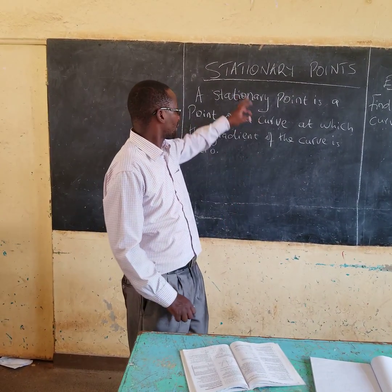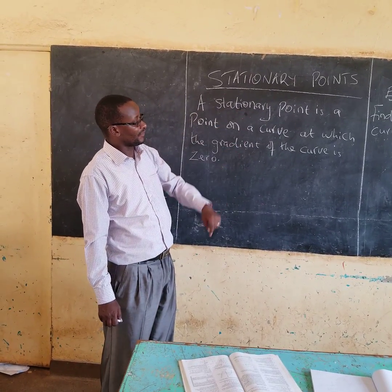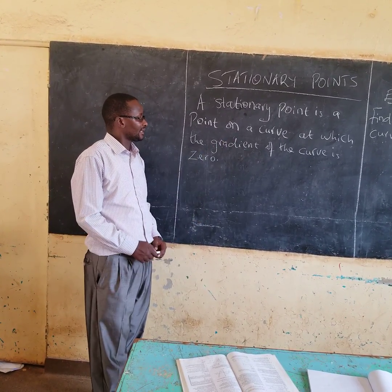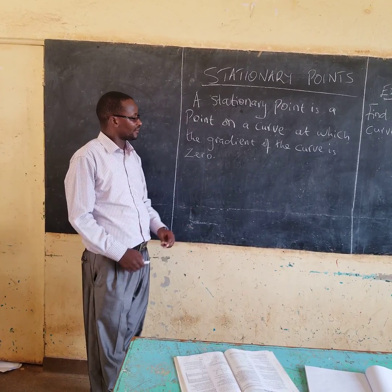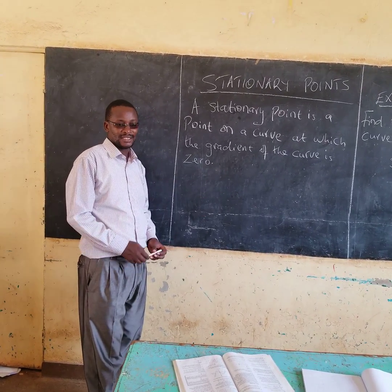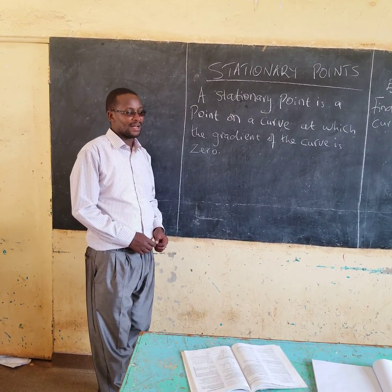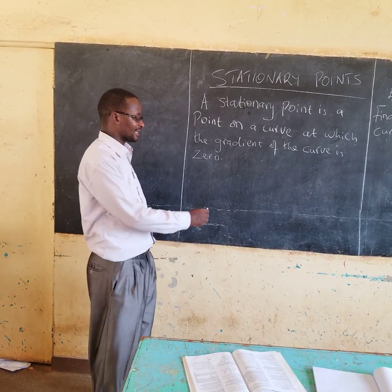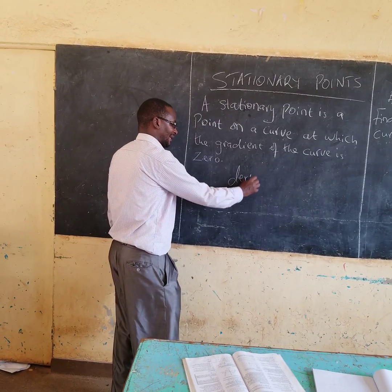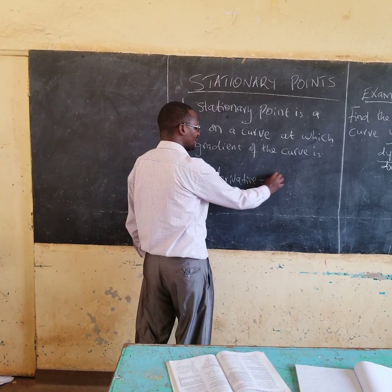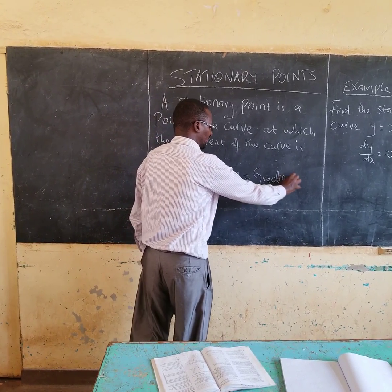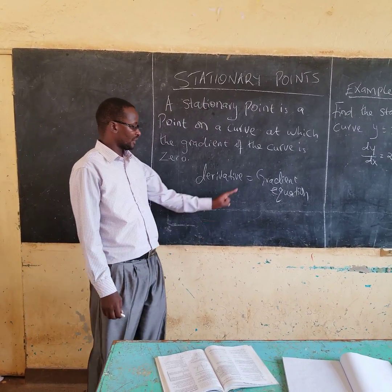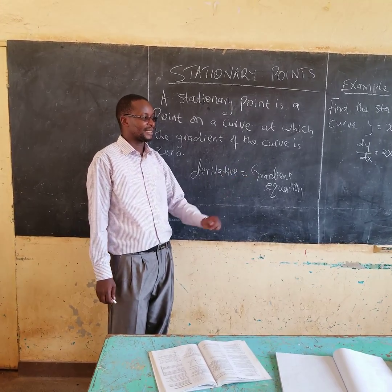Today I want us to learn about stationary points — that is, the stationary points of a curve. As you can see, a stationary point is a point on a curve at which the gradient of that curve is zero. We have been getting the gradient of the curve through differentiation. When you differentiate, remember, you are getting something called a derivative, and this derivative is the same as the gradient function or the gradient equation. So when you differentiate, it is possible to get the gradient of that curve at that particular point.